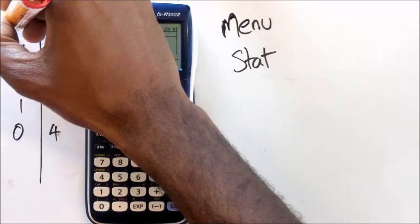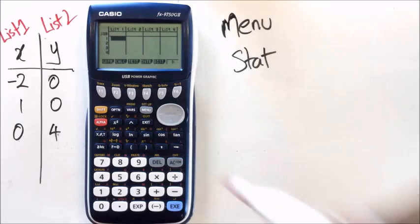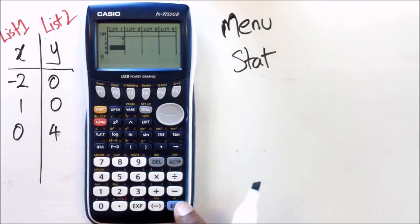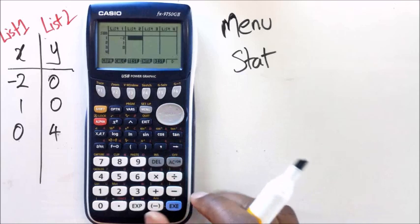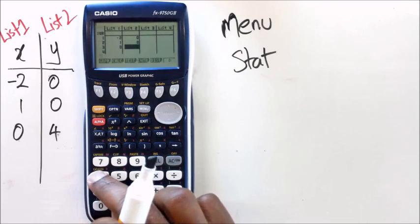So make sure you put your x values in list 1 and your y values in list 2. Alright, so we've got negative 2, 1, 0, and of course my y values are 0, 0, and 4.